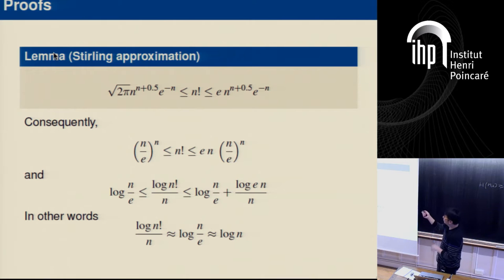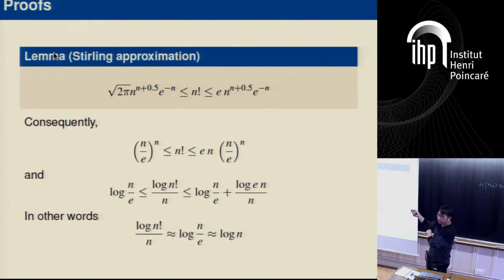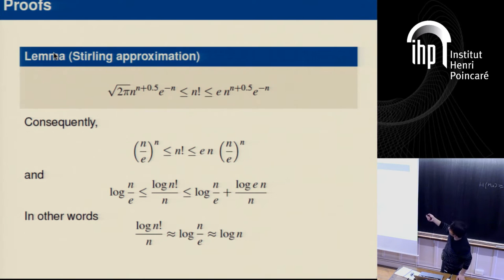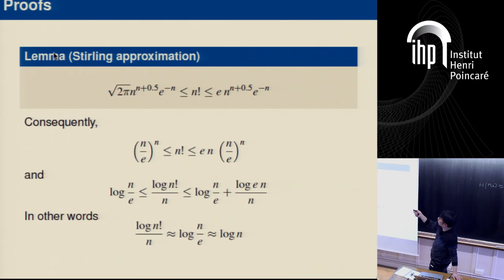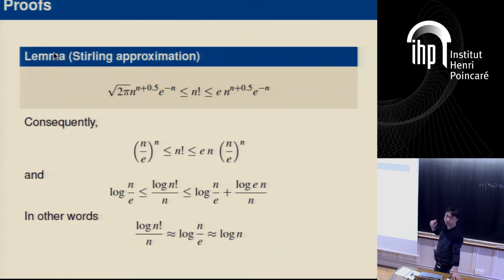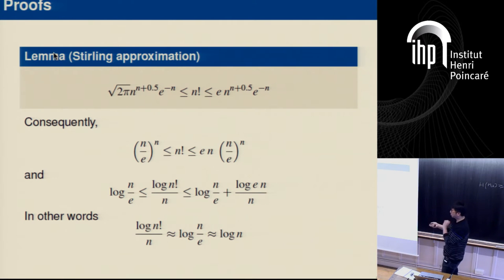Let's prove why this is the case. The proof is based on an approximation for factorials — Stirling's approximation — which gives upper and lower bounds on n-factorial by two expressions. Assume these bounds are correct without proof.